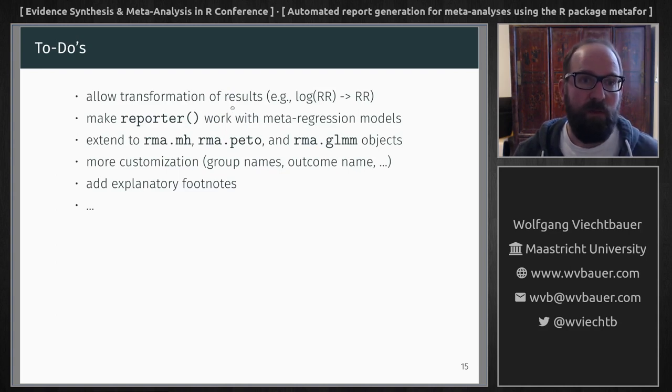Now it's not complete yet. So right now the results are given in terms of the effect size measure that you use as input. So if you meta-analyze log risk ratios then you will also get an average log risk ratio. But usually we want to back transform this to risk ratios. So in the future it may be nice to add the option to transform the results.